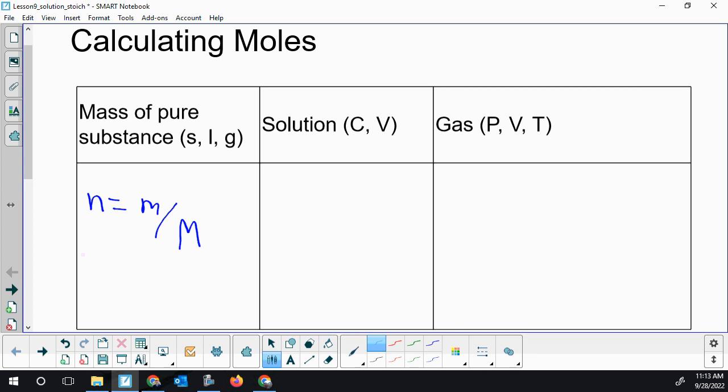So if you know you have 10 grams of methane gas, you're not using PV=nRT. If you have 10 grams of pure methane, you're taking the mass over the molar mass.